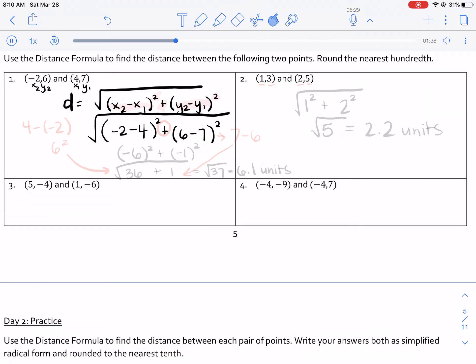And then my y2 is 6, and my y1 is 7. Now watch, there's some magic that happens. Negative 2 minus 4 is negative 6, and then 6 minus 7 is negative 1. So when I put that in, negative 6 squared is actually the same as 6 squared. Negative 6 times negative 6 is 36, because a negative times a negative is a positive. And negative 1 squared is negative 1 times negative 1, or just 1 squared.